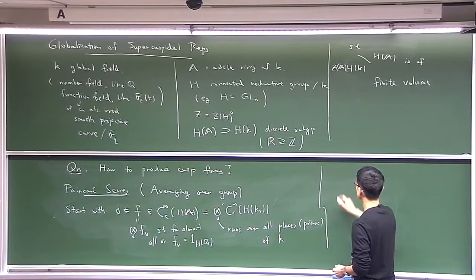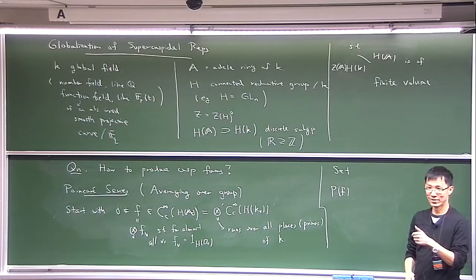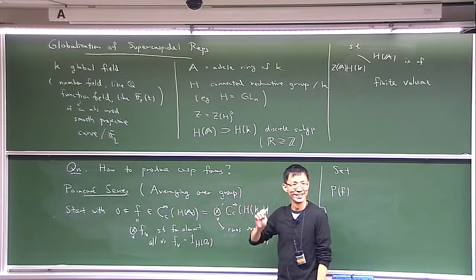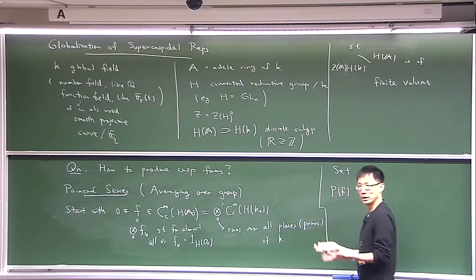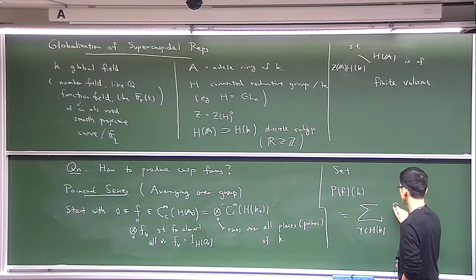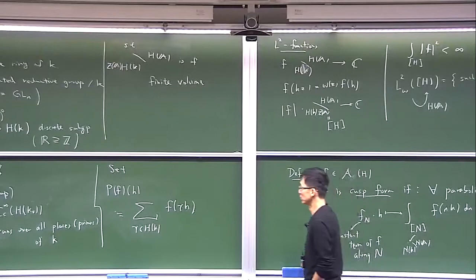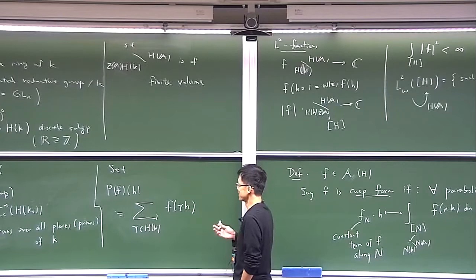Starting from this, you want to build an automorphic form, which means you want to build a function on H_A mod H_k. This function is already a function on H_A, so that's not bad. But you would like it to be left invariant under H_k. It's not, but you force it to be by averaging over H_k. So you define the Poincaré series PF by summing over gamma in H_k of F(gamma^{-1} h). This is clearly a function on H_A mod H_k if it converges.